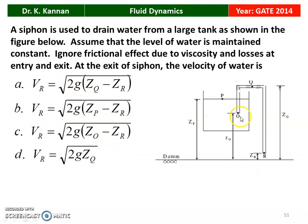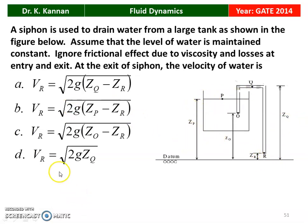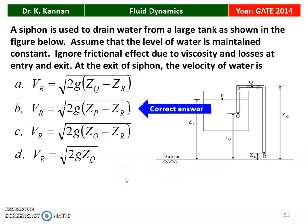Looking at the diagram: point O is at height ZO, point R is shown, and Q is the top of this siphon at height ZQ. ZR is also marked and the level of water equals ZP. The correct answer for velocity at point R — at the outlet of the siphon — is V_R = √(2g(ZP − ZR)). That is the correct answer. We will see how in the next slide.